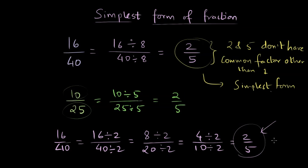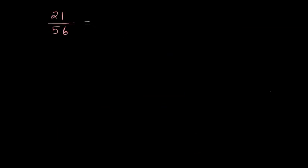Let's take one more example. We have 21 by 56. To get the simplest form, let's first see how we can write 21 in different ways. By doing that, we will know what are different factors of 21. Same thing for 56. We can write it as 7 times 8.